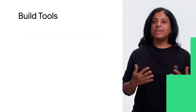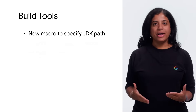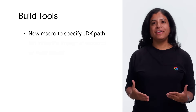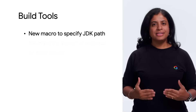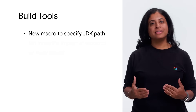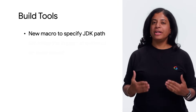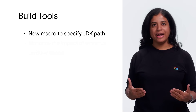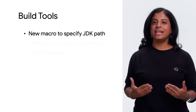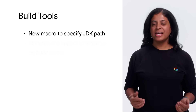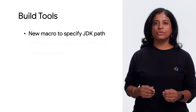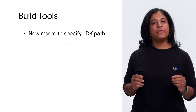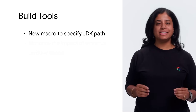We're adding a new macro to specify the Java home path. This reduces errors related to incompatible Gradle and product JDK versions, since there is now a single source of truth for a Gradle JDK selection.